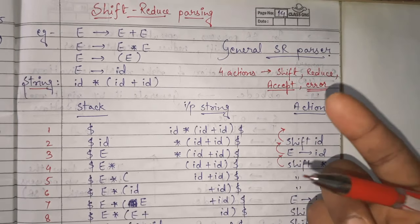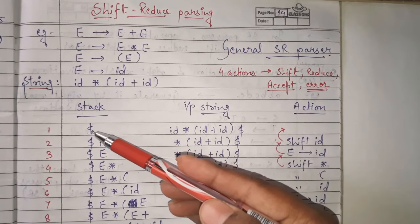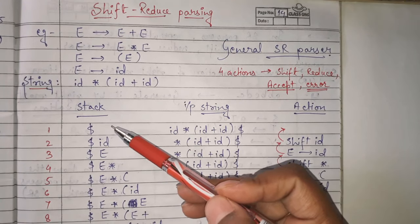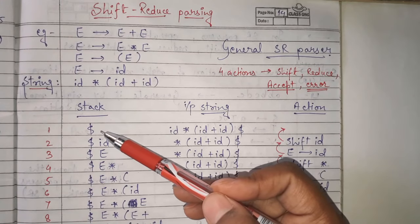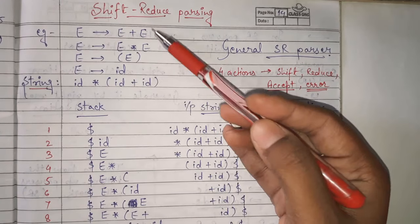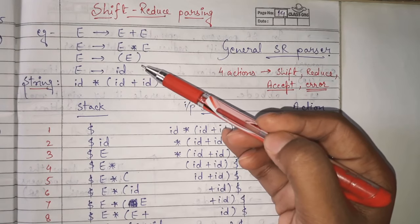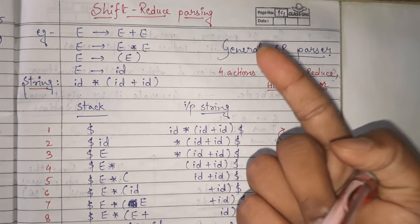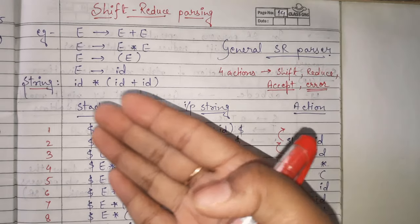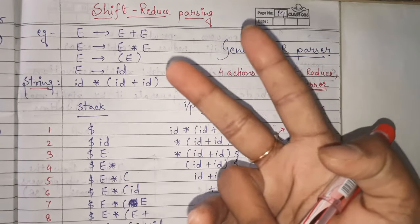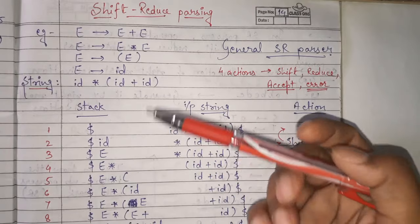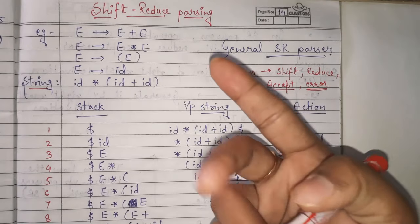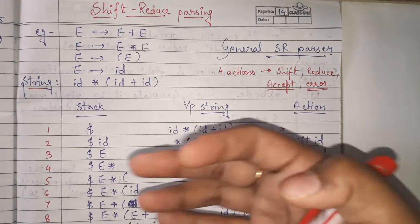In every step, we check what is in the stack with dollar. If there is any symbol with the dollar, we check whether that symbol is present in the RHS of any production of the grammar. If it is present in the RHS of any production, we do a reduce action. Otherwise, if there is nothing like that, we perform shift. This is the main rule to remember.